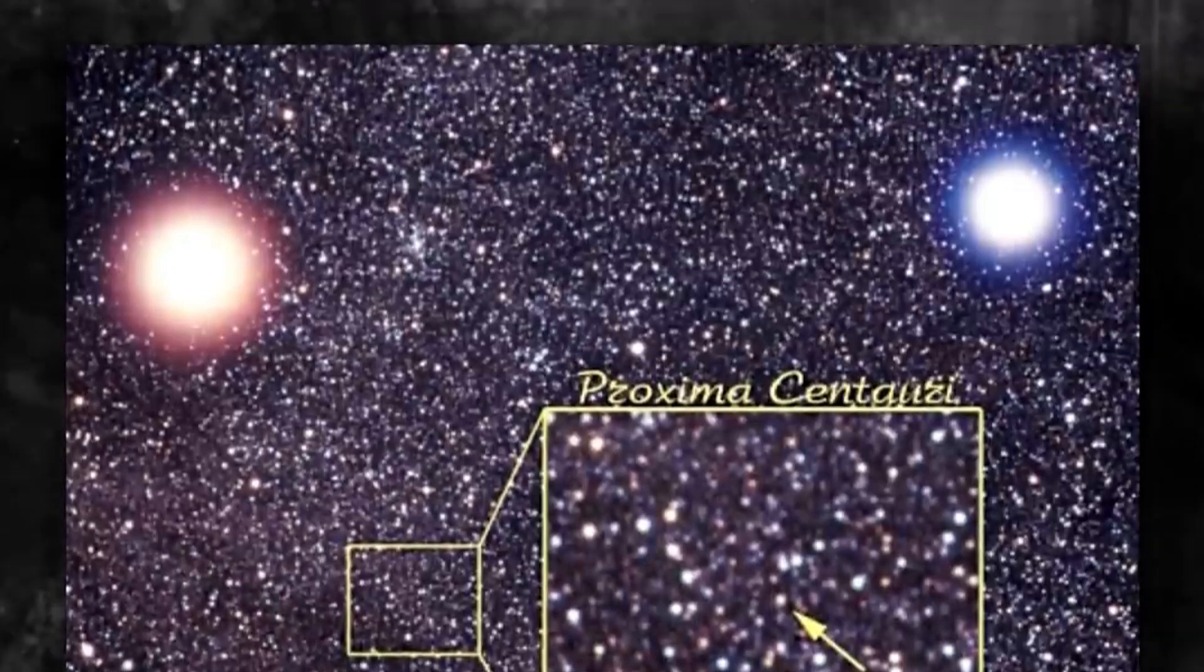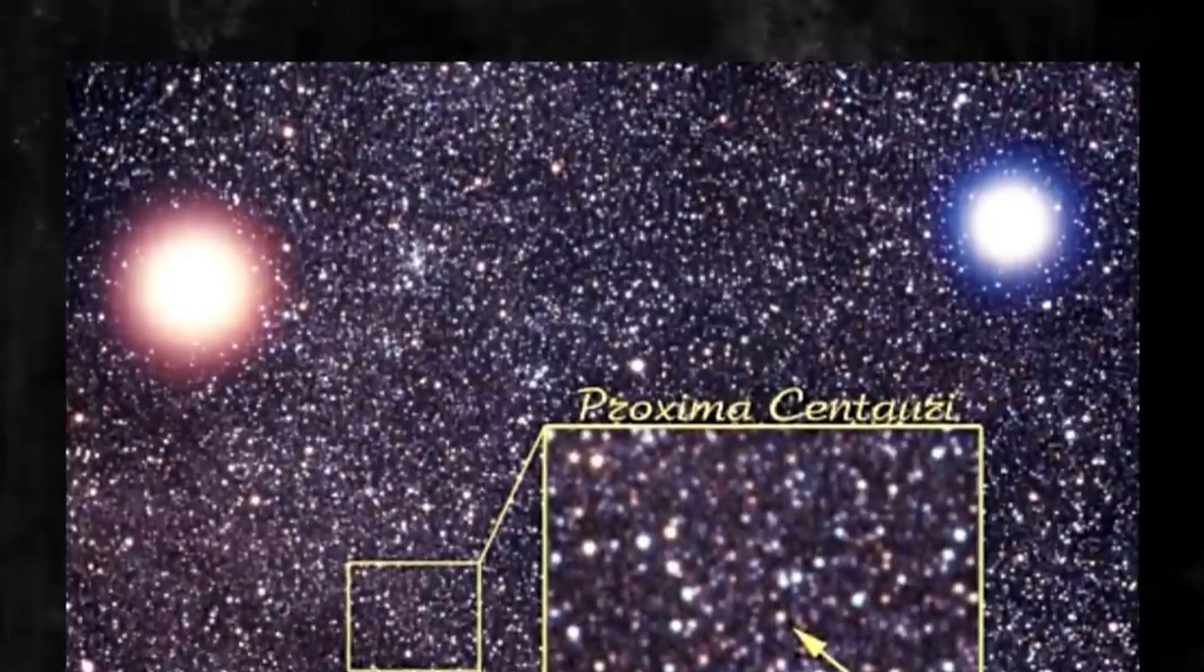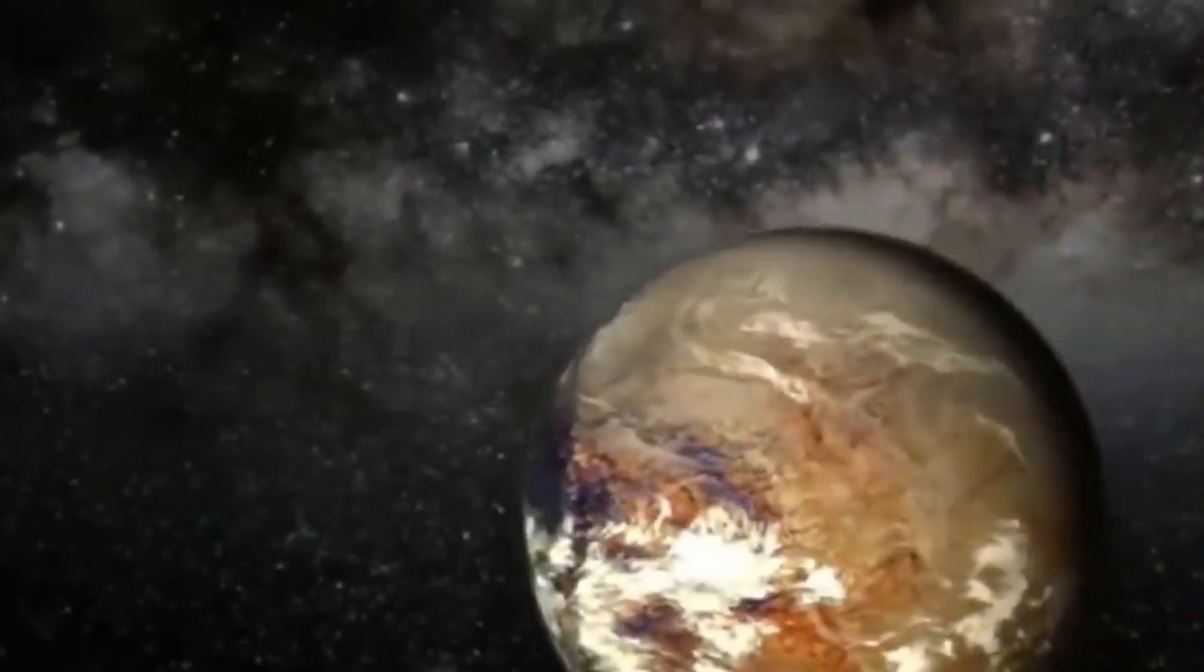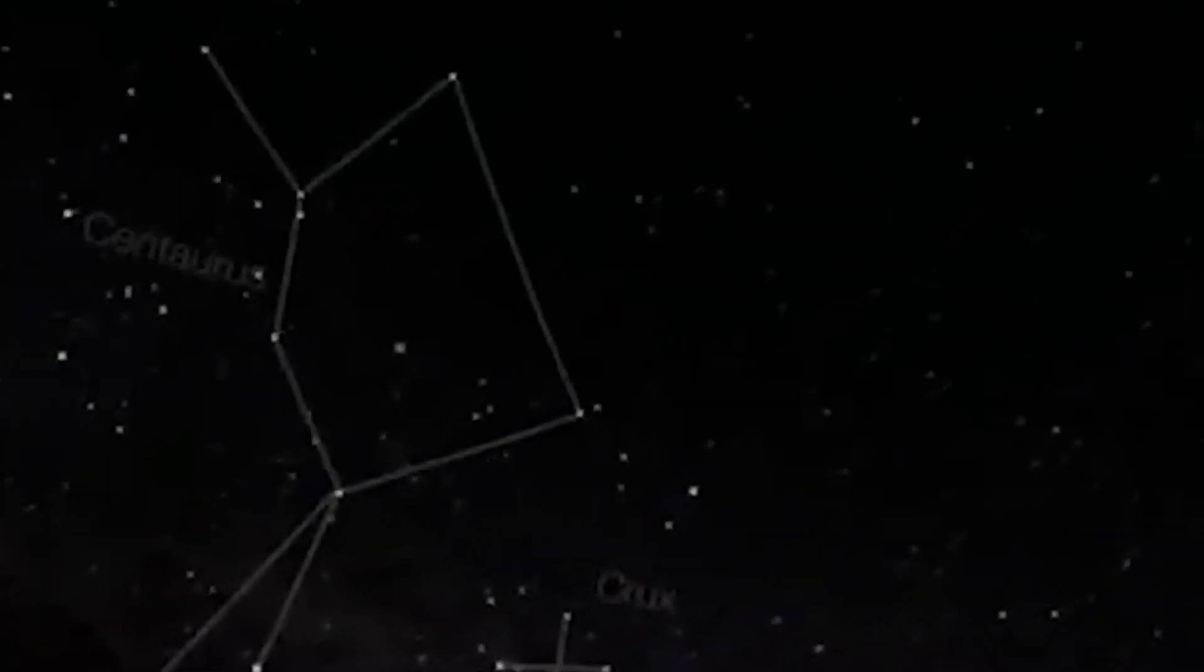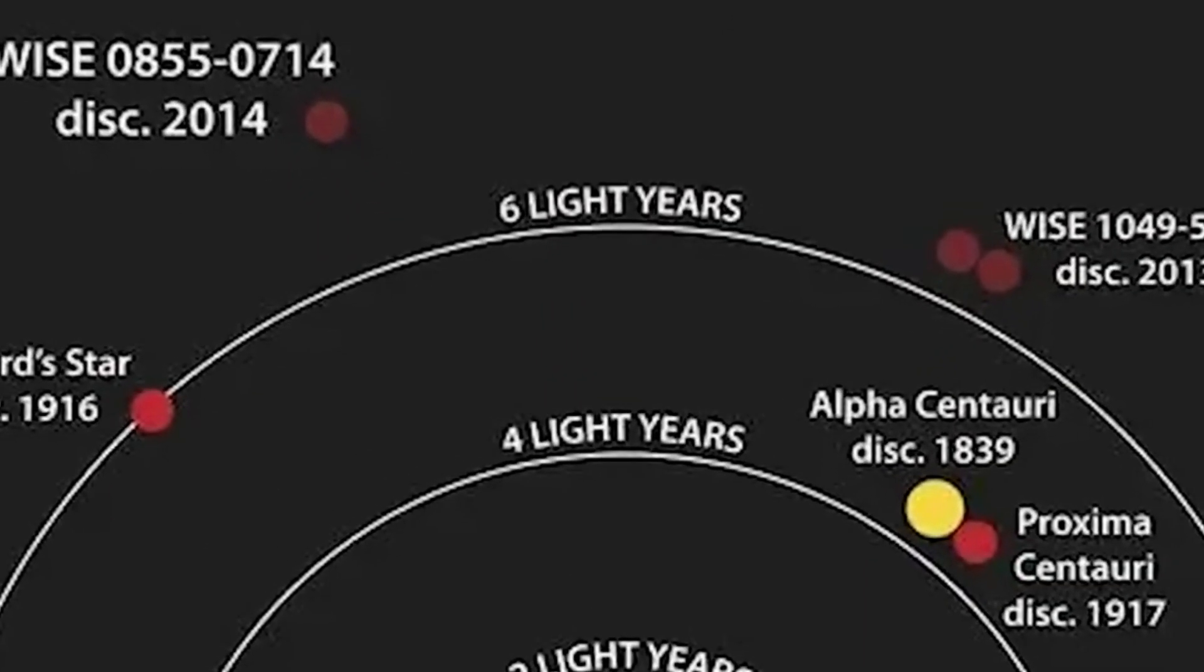Multi-billionaire Yuri Milner, who is one of the main funders of SETI's Breakthrough Listen mission, wants to launch nanosatellites in the next decade to fly into the Proxima system and investigate the possible Earth-like planets there in detail.